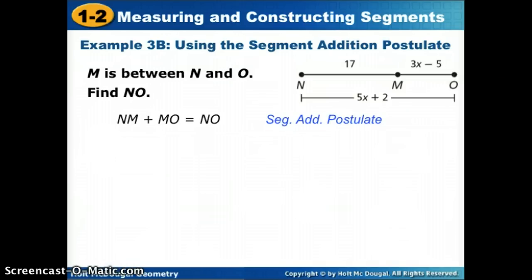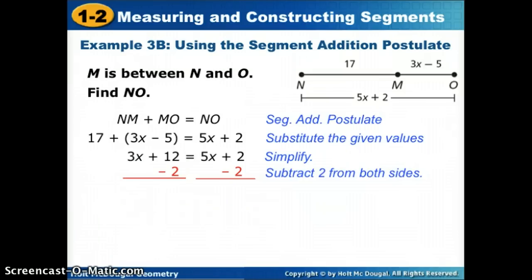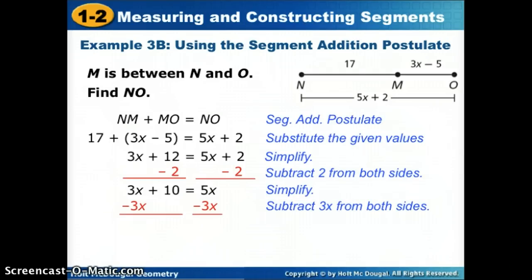Just like we did before, even though there's variables, we're still going to substitute those given values. NM was 17, MO is 3X minus 5, and NO is 5X plus 2. Now all we do is simplify. On the left side, we can combine like terms. We have 3X. 17 plus negative 5 gives us 12. Next, we subtract 2 from both sides to move all our numbers to the left. Subtract 3X from both sides to get all our X's on one side. Divide by 2, and we get that X is 5.